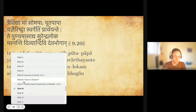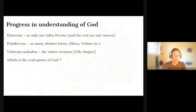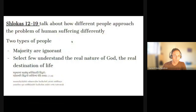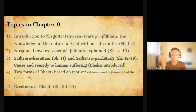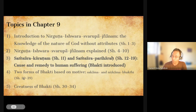We are in the portion on Bhakti, where Bhagavan talks about two types of Bhakti. First we saw the nature of Nirguna Ishvara — Nirguna Ishvara Swarupa Khyanam, the nature of God without qualities. Then the second important aspect is Samsara Karanam and Samsara Parigraha. Now we are moving into the twenty-fifth verse, which comes under Bhakti. Bhagavan classifies two types of Bhakti: Sakama and Nishkama Bhakti, based on motives.